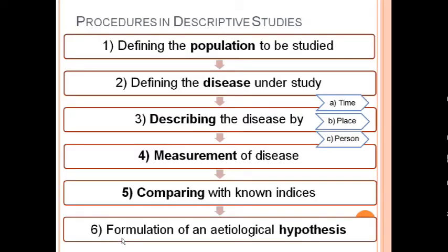In descriptive epidemiology, the procedures include: first, defining the population to be studied; second, studying the various characteristics of the affected population; third, defining the disease to be studied — a case definition is usually formed before the investigation; fourth, describing the disease with respect to time, place, and person; and fifth, measurement of the disease frequency in terms of rates and ratios.